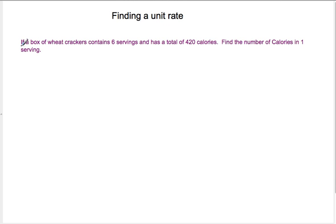Let's try to find a unit rate here. So this one does not have time. So if a box of wheat crackers contains six servings and has a total of 420 calories, find the number of calories in one serving. OK, so what we have is we have 420 calories per six servings, or in six servings. And you'll often see this on food boxes where they tell you the total amount of calories and then they tell you how many servings there are. But we want to know the number of calories in one serving.